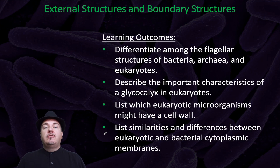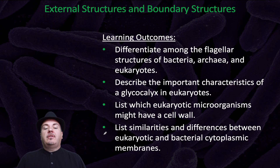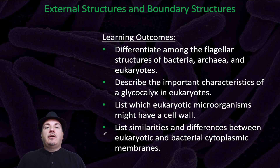By the end of this video, you should be able to differentiate among the flagellar structures of bacteria, archaea, and eukaryotes. You should be able to describe the important characteristics of a glycocalyx in eukaryotes. You should be able to list which eukaryotic microorganisms might have a cell wall and list similarities and differences between eukaryotic and bacterial cytoplasmic membranes.